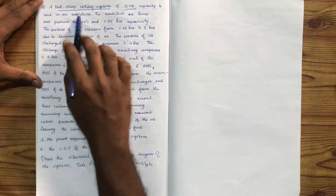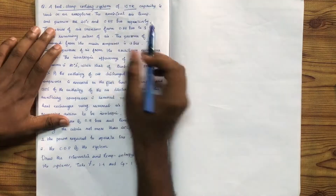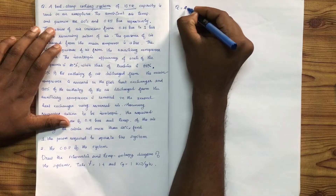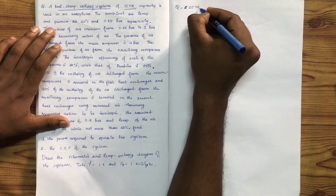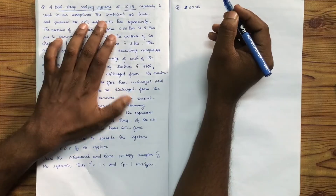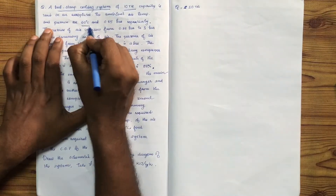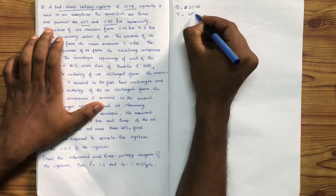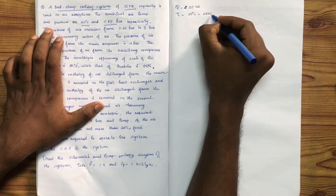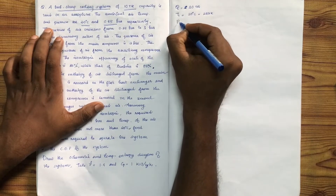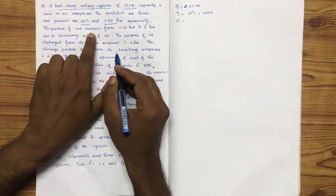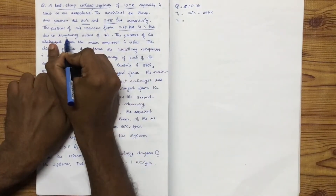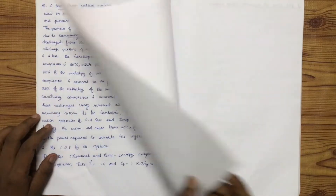This is a Bootstrap cooling system, 10TR — 10 tons of refrigeration — and it is used in an aeroplane. The ambient air temperature and pressure are 20 degrees Celsius and 0.8 bar. T1 is equal to 20 degrees Celsius, which is equal to 293 Kelvin. The pressure of air increases from 0.85 bar to 1 bar due to ramming action.